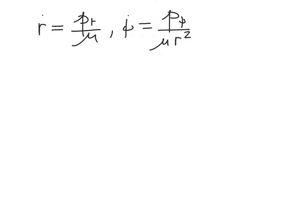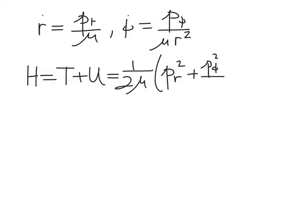Okay. And so now we want to write our Hamiltonian as the sum of the kinetic energy plus the potential energy. And so this is going to be equal to 1 over 2 mu times our kinetic energy which is going to be p_r squared plus p_phi squared over r squared. You can see that just from here. These two expressions are here.